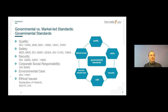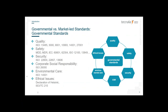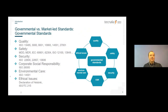We make a broad distinction between governmental standards and market-led standards. Governmental standards regulate quality — these are, for example, ISO norms used in healthcare and other areas. Some relevant examples are shown here for robotics. Then there are safety standards.